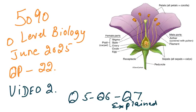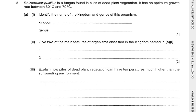Bismillahirrahmanirrahim. This is 5090 level Biology June 25, question paper 2. This is the second video in which we explain questions 5, 6, and 7. Question number 5: Rhizomucor bacillus is a fungus found in piles of dead plant vegetation.